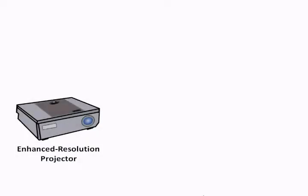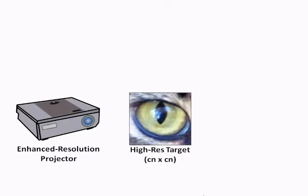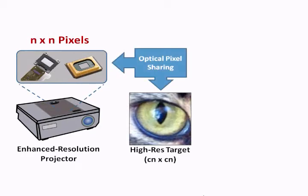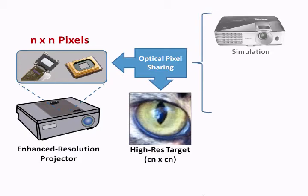In summary, we present an enhanced resolution projector that can create the perception of an image of resolution CN by CN using light modulator panels of resolution N by N, via a novel optical pixel sharing module. We demonstrate the superior quality of such an enhanced resolution projector both in simulation and also using a prototype.